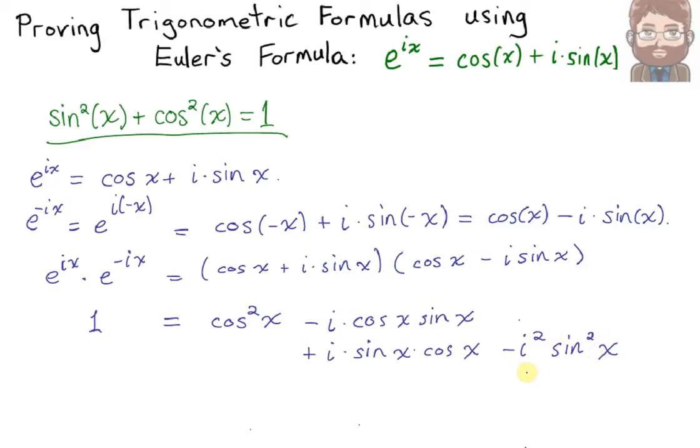Now, there's some great cancellation which happens. These two terms cancel out. And this negative i squared, well, i squared is negative 1. Negative negative 1 is positive 1. So what we're left with is 1 equals cosine squared x plus sine squared x, which was exactly what we hoped to get.